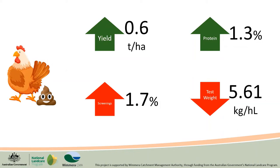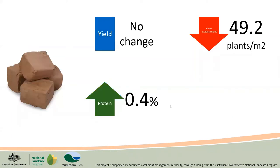Looking at the averages of every treatment that had manure applied compared to the trial average, we saw that chicken manure at 20 tonnes per hectare increased yields by 0.6 of a tonne and increased protein by 1.3%. This is probably due to the large amount of nitrogen applied upfront. However, because these plots received more nitrogen upfront, they grew a lot more biomass and as a result used up their moisture earlier and hit the wall harder. On top of the already high 11% screenings, screenings increased a further 1.7% on average in the chicken manure plots, and test weights fell back to around 72.